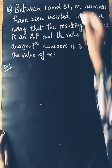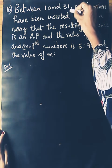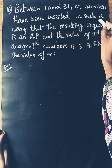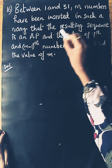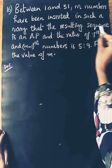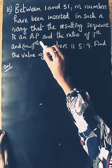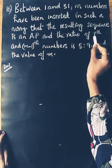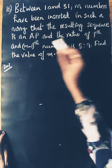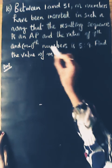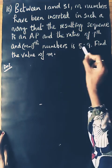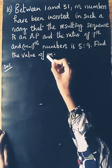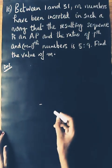10th question. Between 1 and 31, M numbers have been inserted in such a way that the resulting sequence is an AP. The ratio of the 7th and (M-1)th term is 5 to 9. Find the value of M.